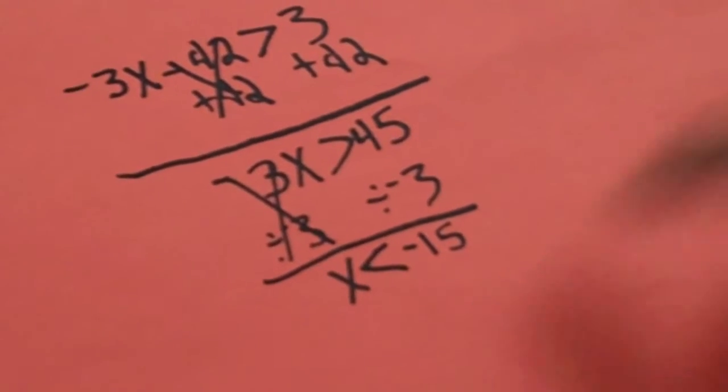And then when I got it, it was negative 15 is greater than X. So it has to be D.